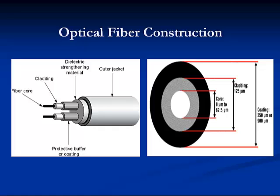To recap: the core is the central region through which light is transmitted; the cladding surrounds the core with a lower index of refraction to keep light in the core; and the coating protects the fiber during handling. Single mode fiber has a core diameter of typically 8.3 micron, while multi-mode fiber has a core size of 62.5 micron or 50 micron. The cladding on both is 125 micron. Understanding these core diameter differences is key to selecting the correct fiber type.